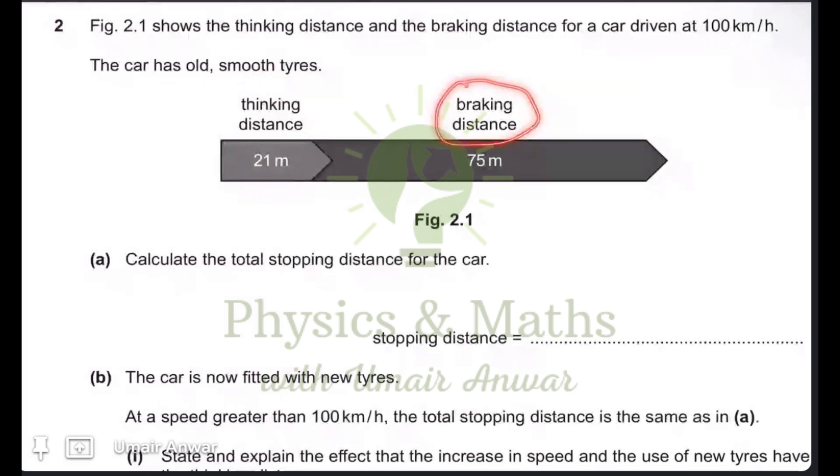Then the braking distance is the distance when the brakes were applied until the car came to a halt or it stopped. So when you apply brakes, the braking distance starts until the moving object stops. The distance covered is called the braking distance.